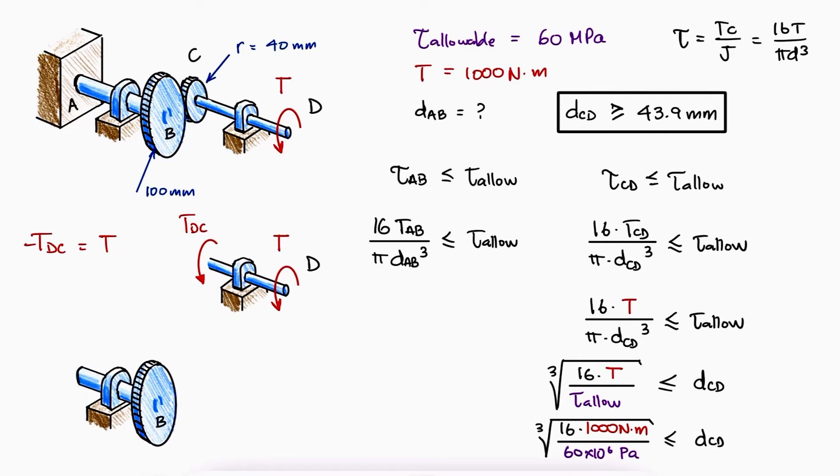To find the internal torque that AB is subjected to, we would first need to know the torque that gear C imparts on gear B. If we look at both gears from the positive x-axis, we would see that the counterclockwise external torque T exerts a force on B that points downward.